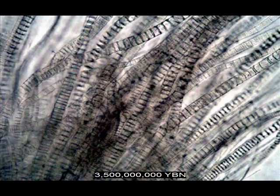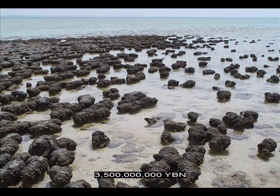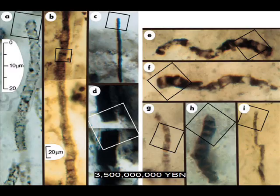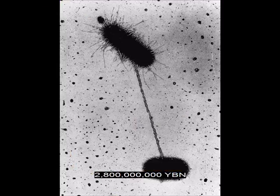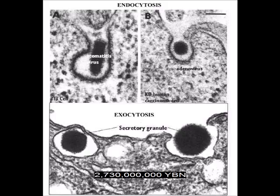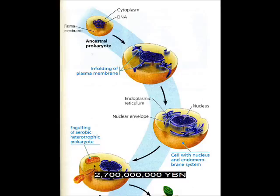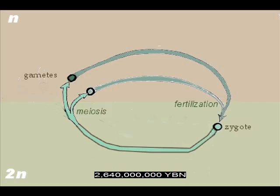Multicellular prokaryotes. Oldest fossil evidence of life: stromatolites. Oldest fossil of an organism. Gender and sex. Conjugation evolve in bacteria. Cells can eat other cells. Eukaryotic cell — the first cell with a nucleus. The first protist. The nucleus may develop from the infolding of the plasma membrane.